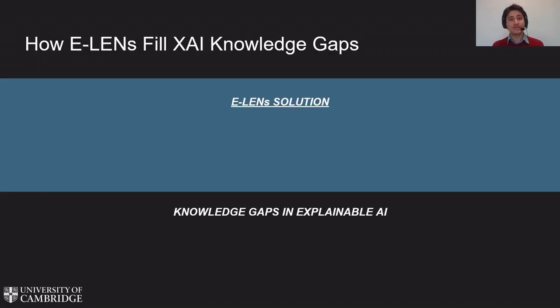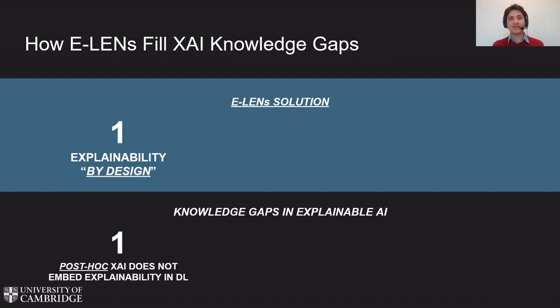Nonetheless, our results proved how ELENs can fill the three main knowledge gaps of explainable AI we mentioned at the beginning. First, ELENs introduce both in the architecture and in the learning process a few inductive biases designed for explainability purposes, making these models explainable by design.